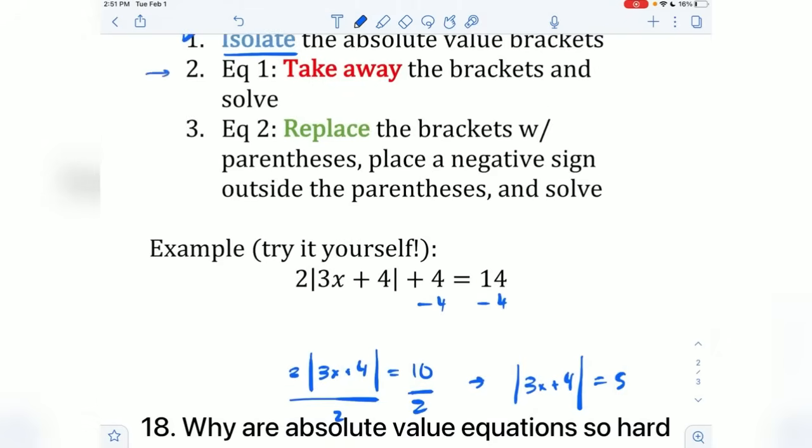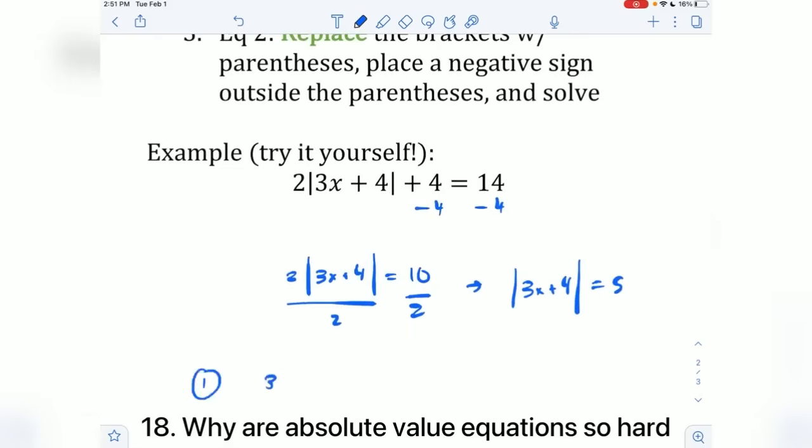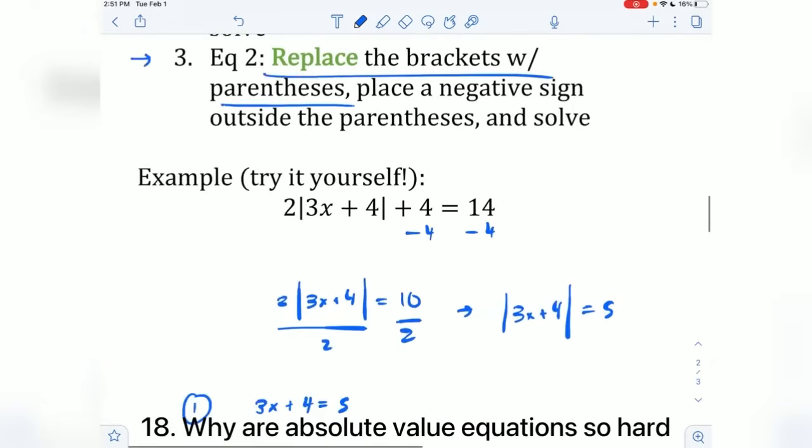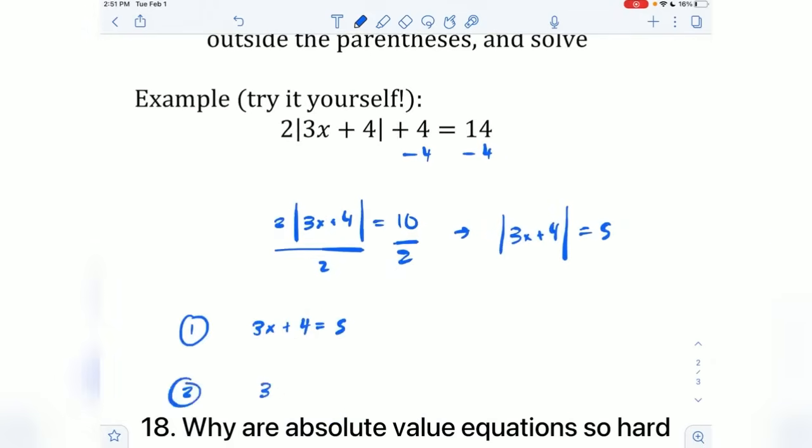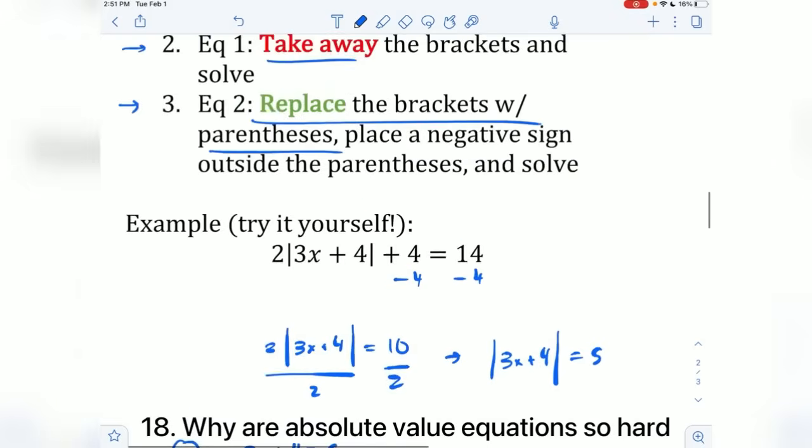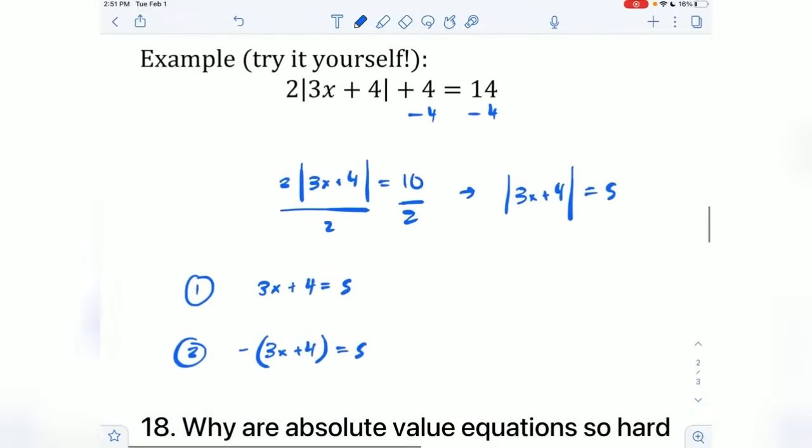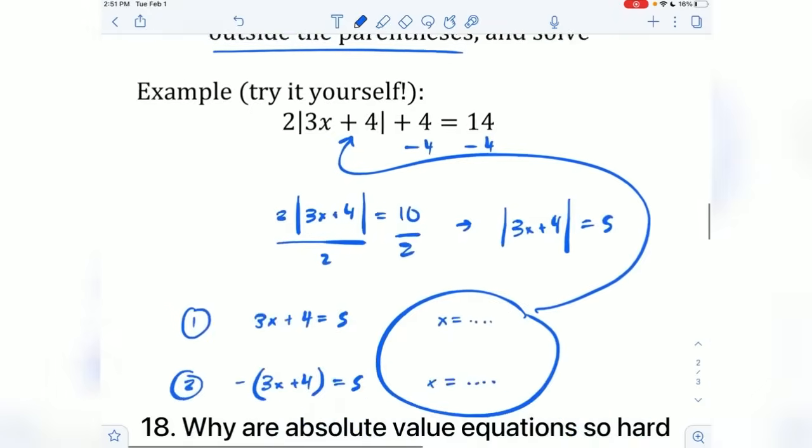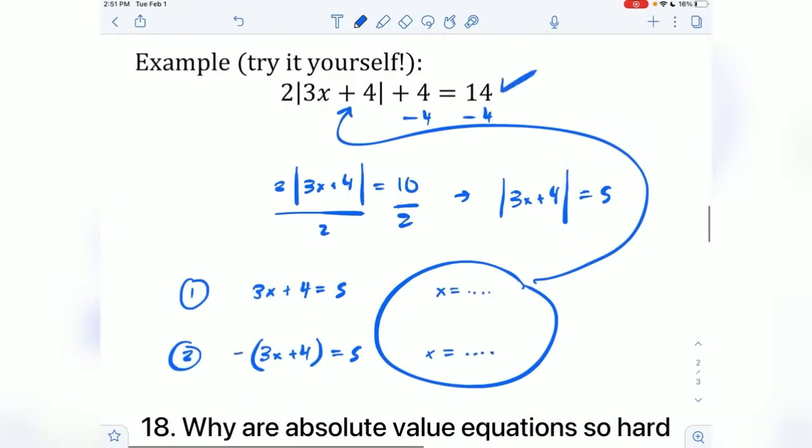Now, what I need to do is I need to get two equations. For the first one, I take away the brackets and solve. So my first equation, take away the brackets and solve. Very easy. It's just simple algebra. The second equation, I replace the brackets with parentheses. And then I do what? Place a negative sign outside the parentheses and then solve. So you'll get two different answers. x is going to be something here and x is going to be something here. If you plug either one of these x values into the original absolute value equation, you'll get the same answer. You'll see that the answer is actually true.